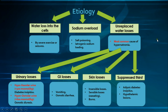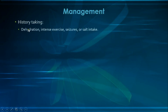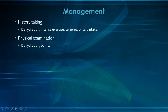Management starts with history taking: ask about polyuria as seen in diabetes insipidus or osmotic diuresis, history of vomiting, diarrhea, burns, sweating, intense exercise, seizures, or salt intake. On physical examination, assess for dehydration signs such as decreased skin turgor, dry mucous membranes, decreased urine output, and flat JVP. If dehydration is severe, the patient may also have hypotension. Also inspect the skin for burns.